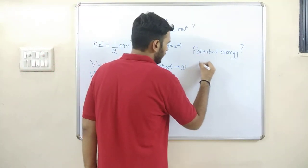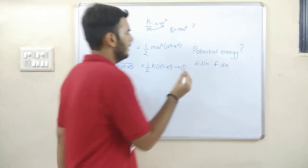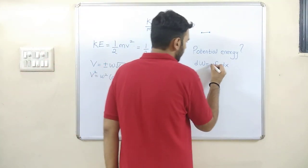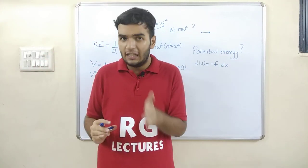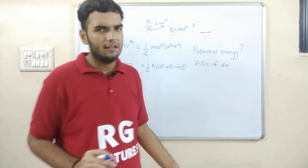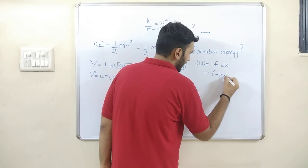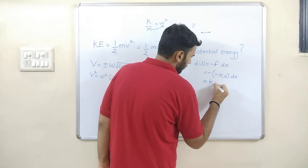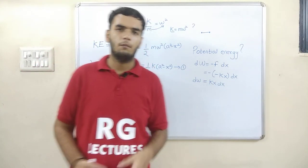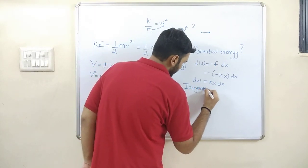Let us substitute the formula. We know that work done equals force times displacement. A small work dW is done when a particle moves a small displacement dx. We know force is directly proportional to displacement, and F = minus kx because the directions are different — hence the minus sign. Substituting F = minus kx, minus times minus becomes plus, so I am left with: dW = kx dx.